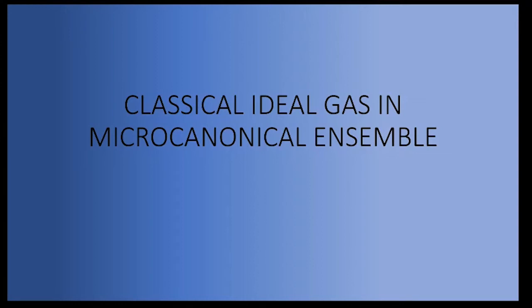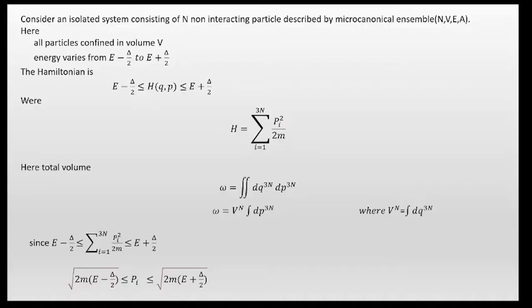We are discussing the classical ideal gas in the microcanonical ensemble. This is one application of the microcanonical ensemble. We consider an isolated system consisting of N non-interacting particles in 3-dimensional space, described by the microcanonical ensemble parameters N, V, E, and A. All particles are confined in the volume V.